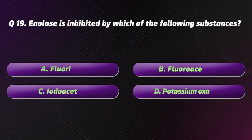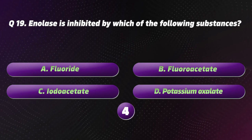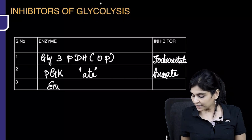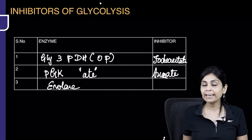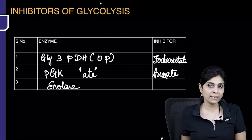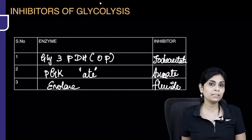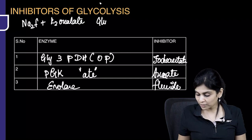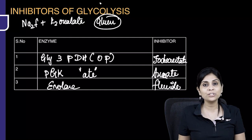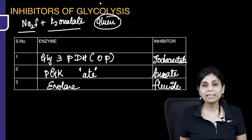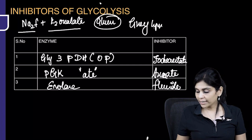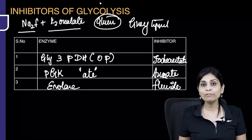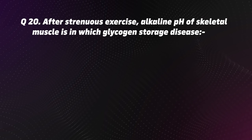Question 19. Enolase is inhibited by which of the following? Options: A. Fluoride, B. Fluoroacetate, C. Iodoacetate, D. Potassium oxalate. The correct option is A, Fluoride. Enolase of glycolysis, which removes water and forms phosphoenolpyruvate, is inhibited by fluoride. That is why a combination of sodium fluoride and potassium oxalate is used for plasma glucose estimation, collected in a grey-top tube.